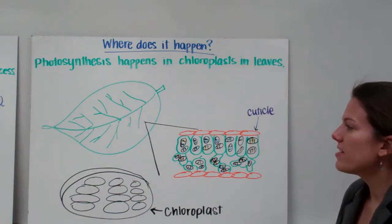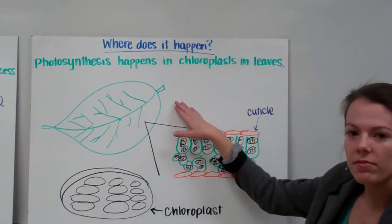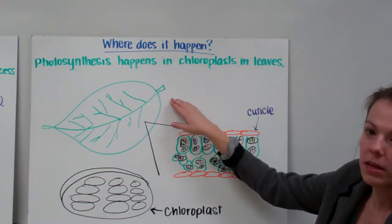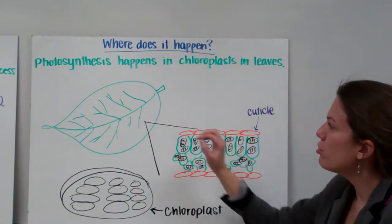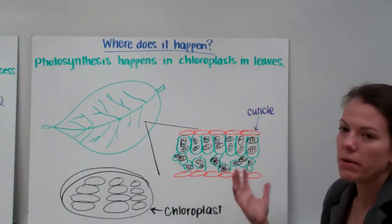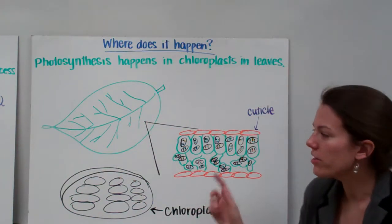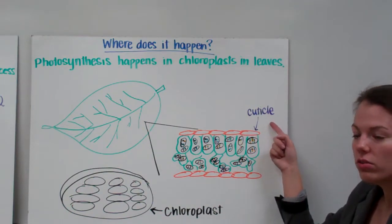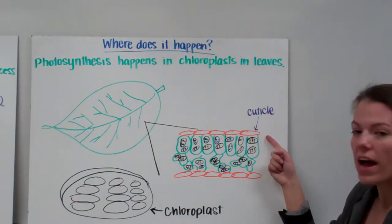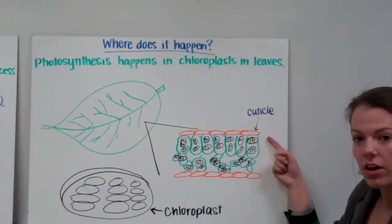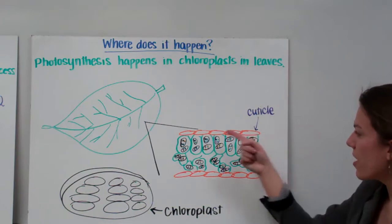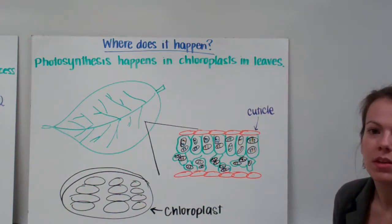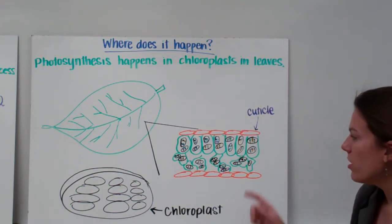Photosynthesis happens inside of a leaf — not the roots; the roots don't get any sun, but the leaf. If you zoom into the leaf, you'll see that the leaf is made of different layers. It has a waxy layer up top called the cuticle. Remember, wax is one of our examples of the lipids. That cuticle helps the plant to prevent from drying out.